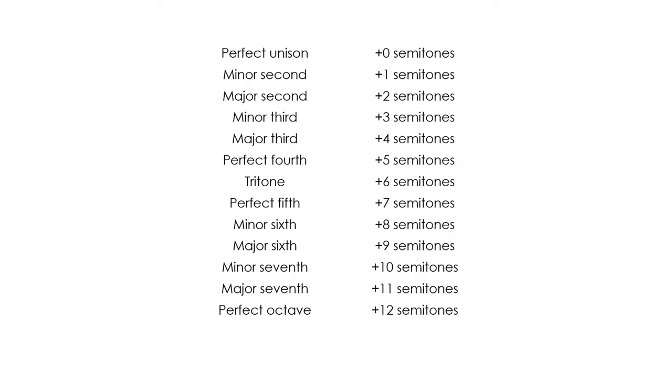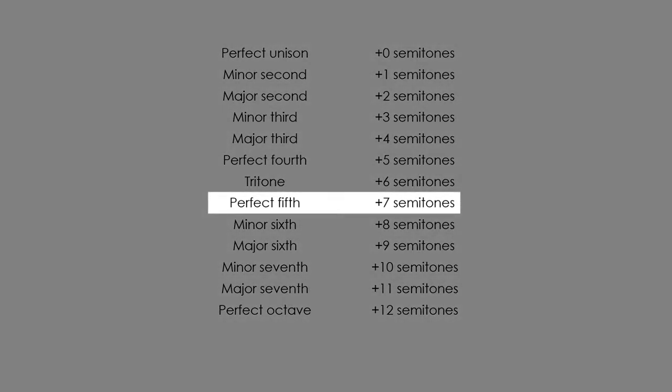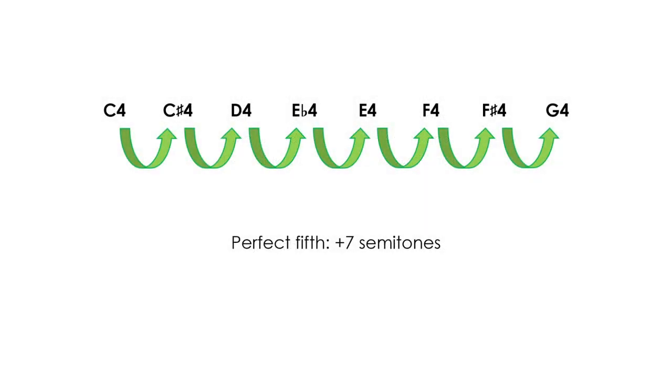Before continuing, it will be useful to know the names of musical intervals. Basically, they are names for different intervals between two notes, depending on how many semitones one note is above another. For example, the perfect fifth of any note would be the note located 7 semitones above that note. So the perfect fifth of C4 would be G4.